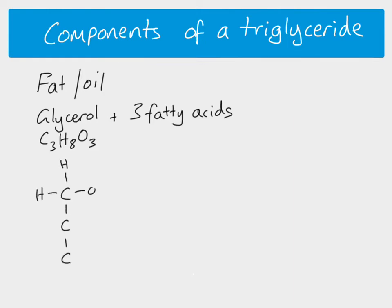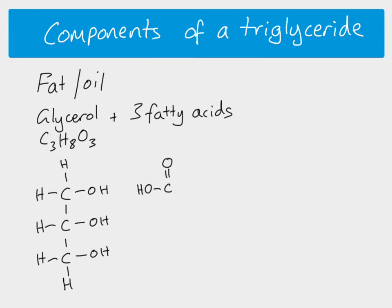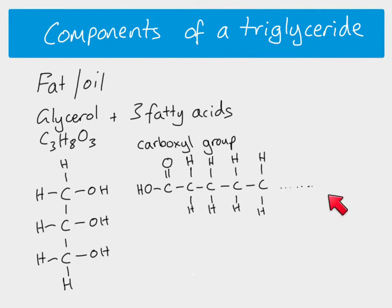If we write out the structure of glycerol, we've got three hydroxyl groups. Our fatty acids all have a carboxyl group — COOH, or C double bond O, OH — and this is known as the head of the fatty acid. Then we have the tail, which is just carbon and hydrogen, a hydrocarbon chain or hydrocarbon tail.